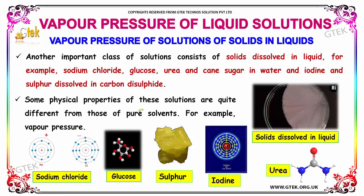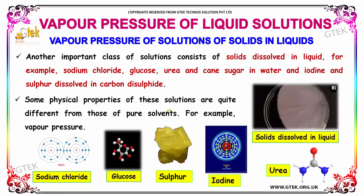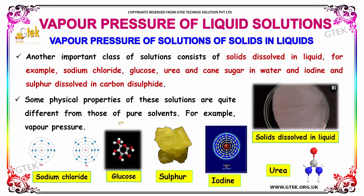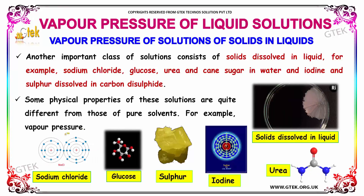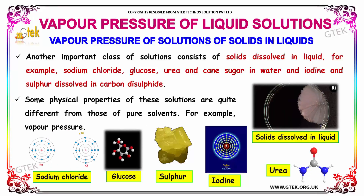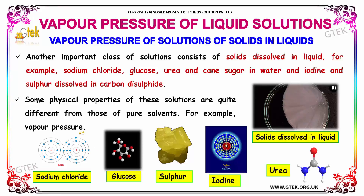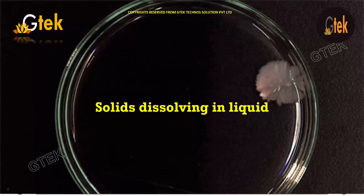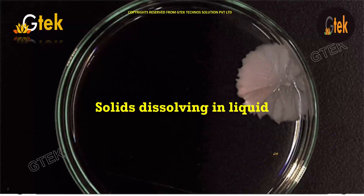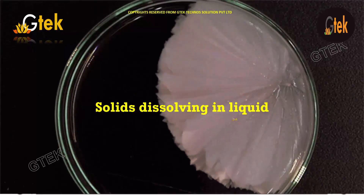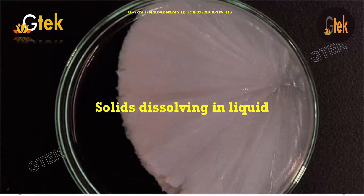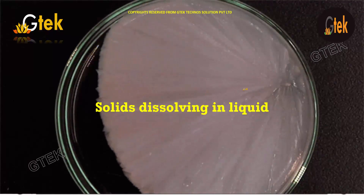Some physical properties of these solutions are quite different from those of pure solvents. A typical example is vapor pressure. Let's discuss more on the solid dissolving in liquid. This is how the solid started dissolving in liquids.